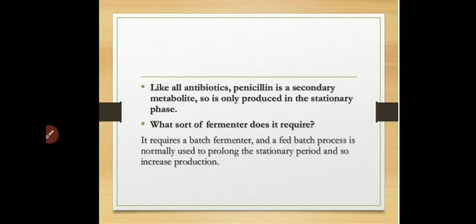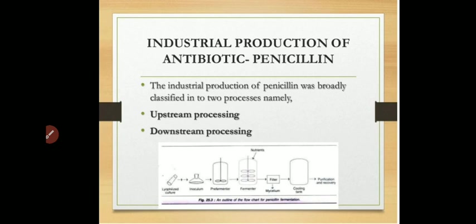For the production of penicillin at industrial scale, a batch fermenter or fed-batch fermentation process can be used, because in the fed-batch process a prolonged stationary period can be maintained, which increases the production of penicillin.